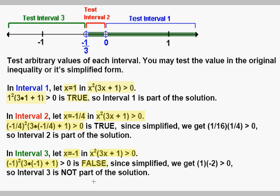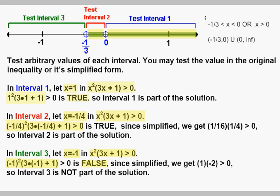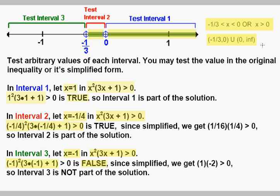Our solution is the segment from negative one third to 0 and also x greater than 0, not including x equals 0 or x equals negative one third. We can write the final answer as negative one third less than x less than 0 or x greater than 0. In interval notation, that is (negative one third, 0) union (0, positive infinity).